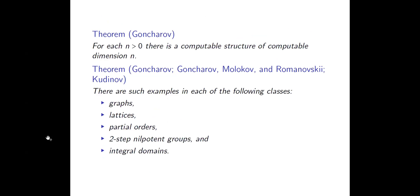On the other hand, Gontroff was able to construct a structure that had computable dimension n for any finite n. For example, there's some structure that has two different computable copies that aren't computably isomorphic, but those are the only two — any other computable copy is isomorphic to one of those two. That's a quite complicated proof because it's something you can't do in those classes from the previous slide.